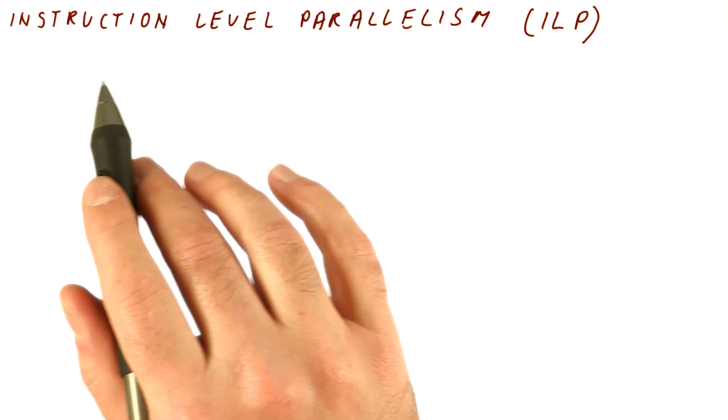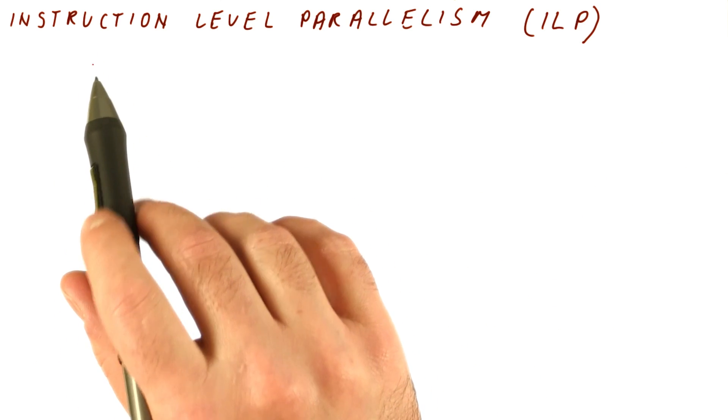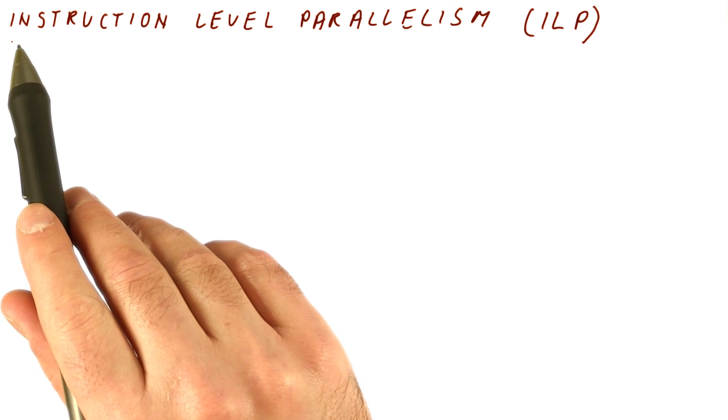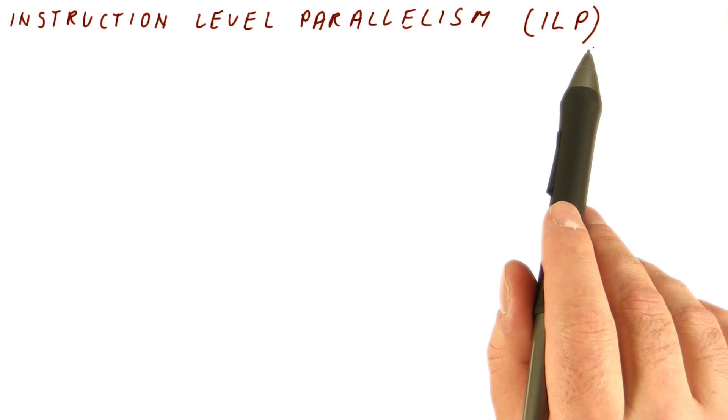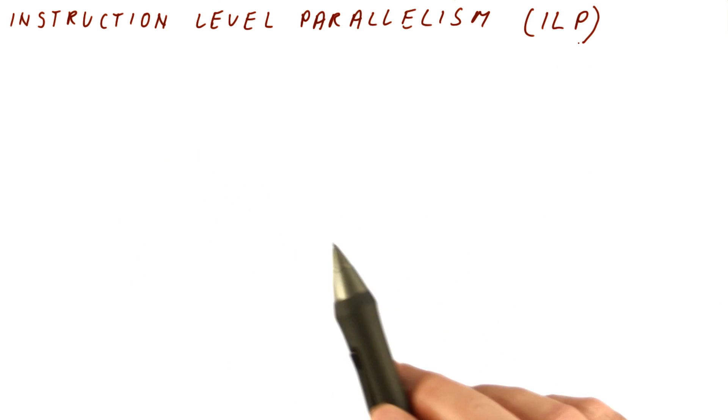Now that we have seen how to do registry naming and how to follow the true dependencies, we are ready to learn what instruction level parallelism or ILP is. So we will now define what it is.